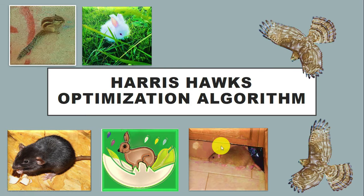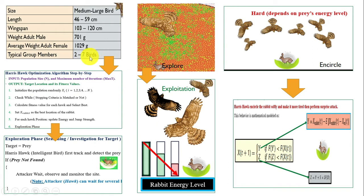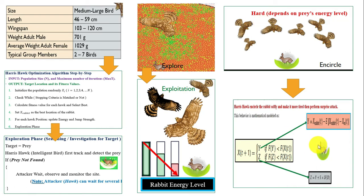In this video you will learn about the Harris Hawks Optimization algorithm. Topics covered include: basic details about Harris Hawks, what this algorithm is about, how it works step by step, and certain phases in this algorithm — the exploration phase, exploitation phase, hard and soft roundup — along with mathematical models for energy level calculation, position updates for each hawk, and position updates for the target in the search space.